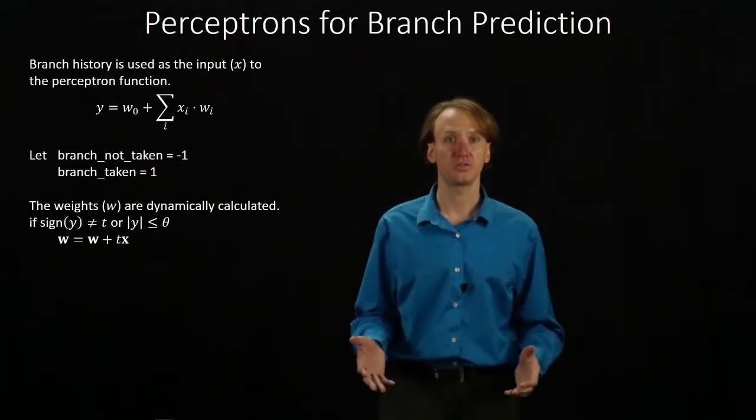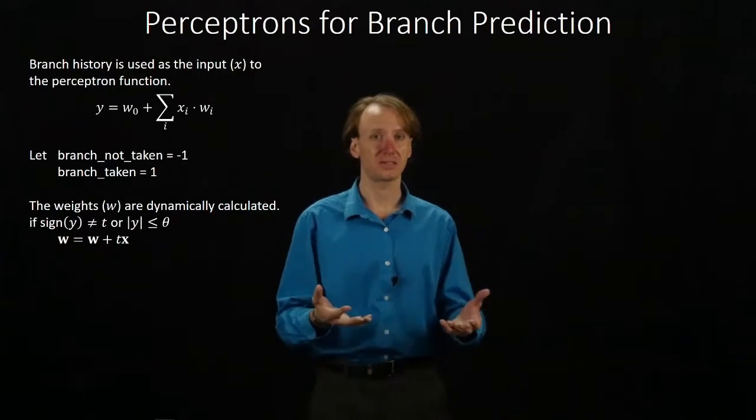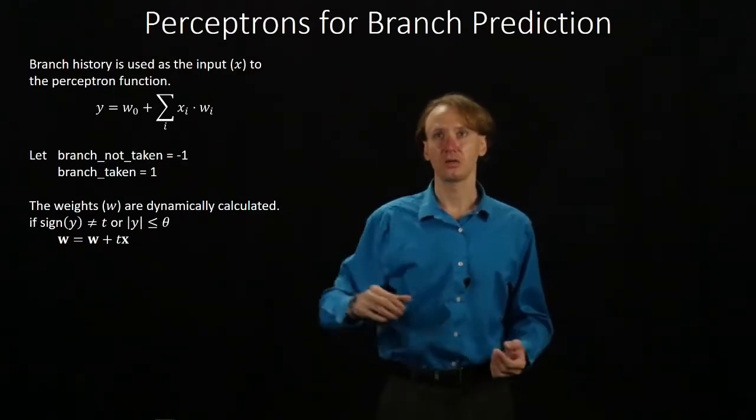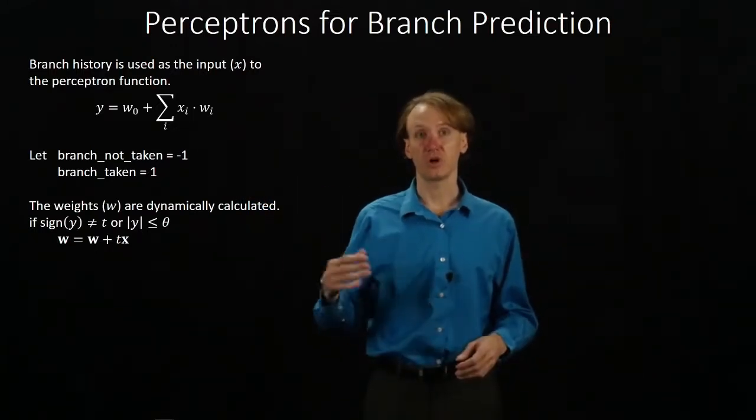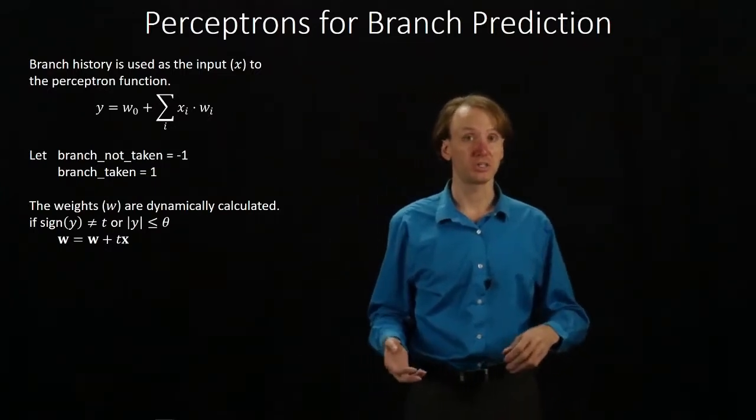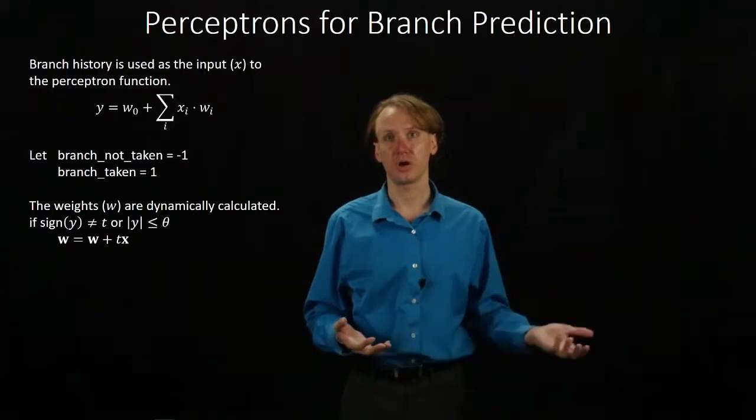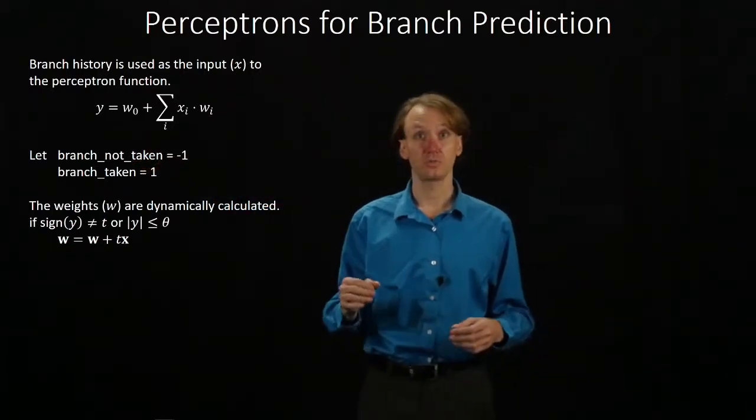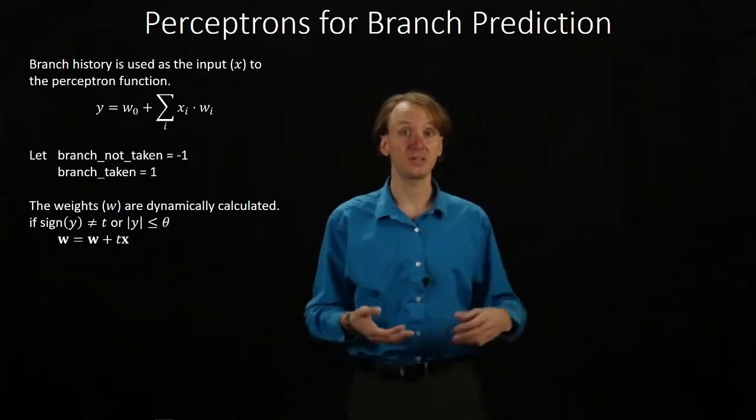So we'll use our branch history as the input to our perceptron function. We might take the last n branches, either from global history or local history. Use that for all of the x sub i's in our equation. If our branch is not taken, then we'd put in a negative 1 for x sub i. If our branch is taken, then we'd put in a 1. To determine whether we should take our branch or not, we'll just look at the sign of y. If the sign is negative, then we'll assume that our branch is not taken. If our sign is positive, then we would assume it is going to be taken.